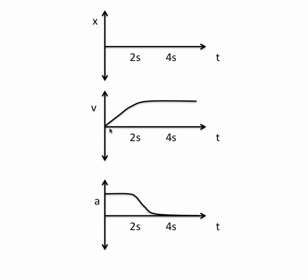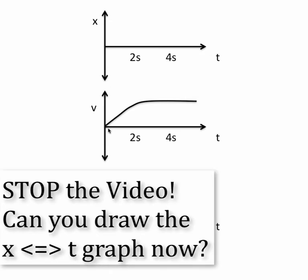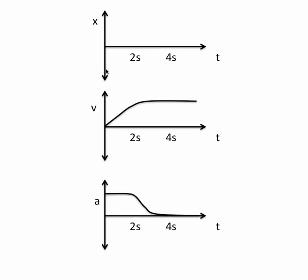Now from this velocity graph, how do we graph the displacement over time? Well first of all, the displacement can start wherever I say it will. So let's start the displacement down here. And we realize in the very beginning we're not moving. So this is going to be flat because there's no change in displacement over time.